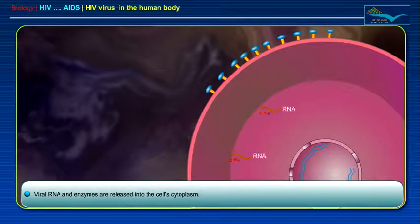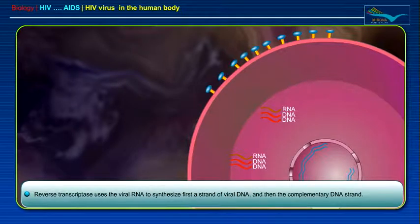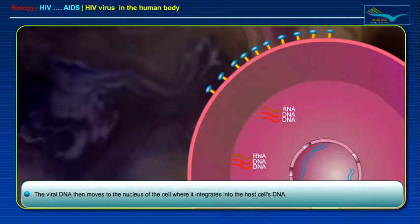Viral RNA and enzymes are released into the cell's cytoplasm. Reverse transcriptase uses the viral RNA to synthesize first a strand of viral DNA and then the complementary DNA strand. The viral DNA then moves to the nucleus of the cell where it integrates into the host cell's DNA.